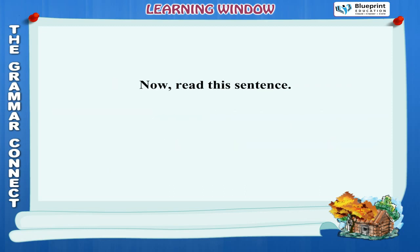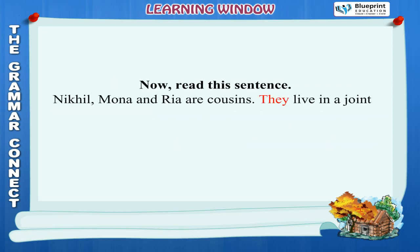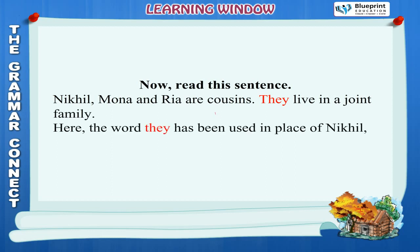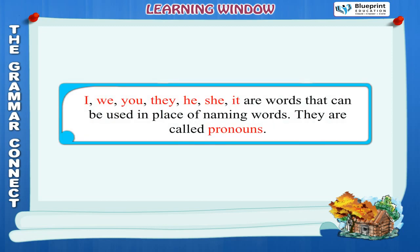Now read this sentence: Nikhil, Mona and Ria are cousins. They live in a joint family. Here, the word 'they' has been used in place of Nikhil, Mona and Ria. I, we, you, they, he, she, it are words that can be used in place of naming words. They are called Pronouns.